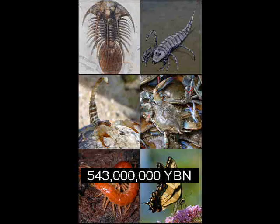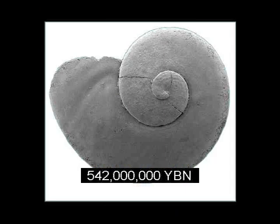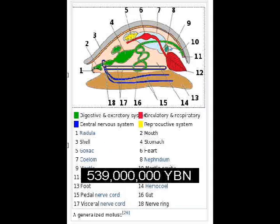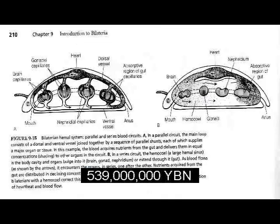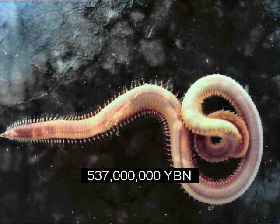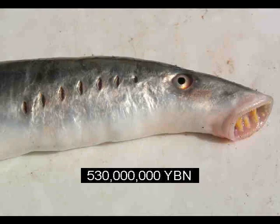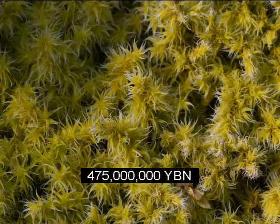First fish. Arthropods — insects, crustaceans. First shell or skeleton. Mollusks. Heart. Segmentation. Vertebrates — ancestor of most fish and all amphibians, reptiles, birds, and mammals.